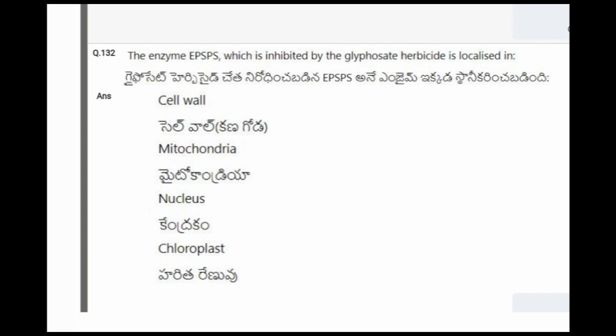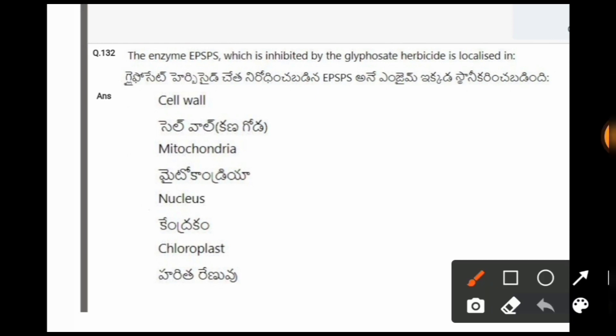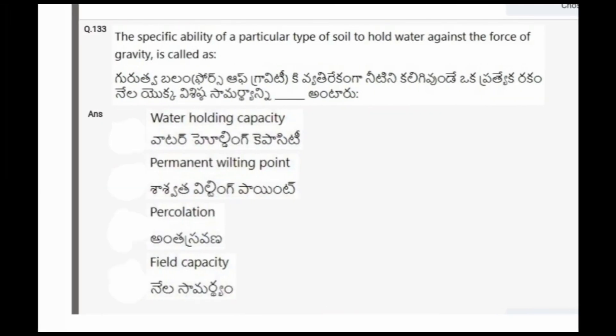Next question: The enzyme EPSPS, which is inhibited by the glyphosate herbicide, is localized in? The options are cell wall, mitochondria, nucleus, chloroplast. The correct option is chloroplast.